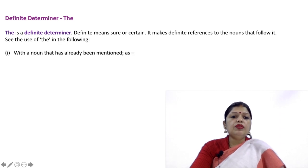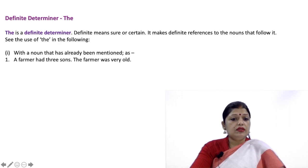With a noun that has already been mentioned: A farmer had three sons. The farmer was very old. A fox lived in a burrow. The burrow was in a big jungle.